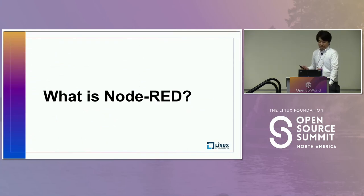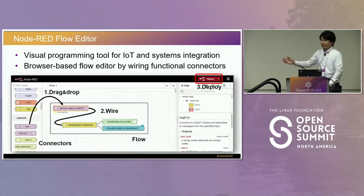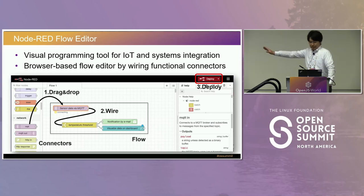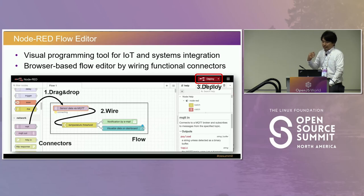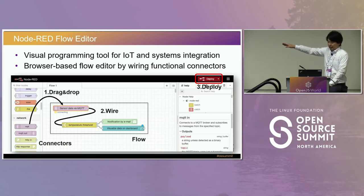Node-RED is a visual programming tool for IoT and system integration. As you can see in the screenshot, the Node-RED flow editor is a browser-based environment. Flow developers can create their original application, called a flow, by wiring connectors in the environment. On the left side, there are many connectors with specific functions. After dragging and dropping connectors to the central workspace and wiring them in processing order, clicking the deploy button executes the flow immediately in the back-end server.